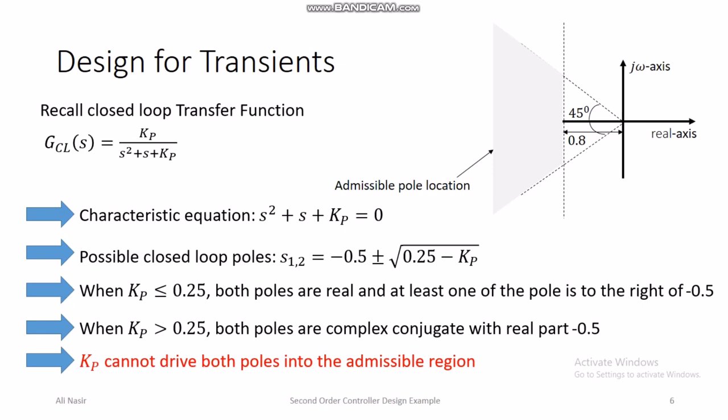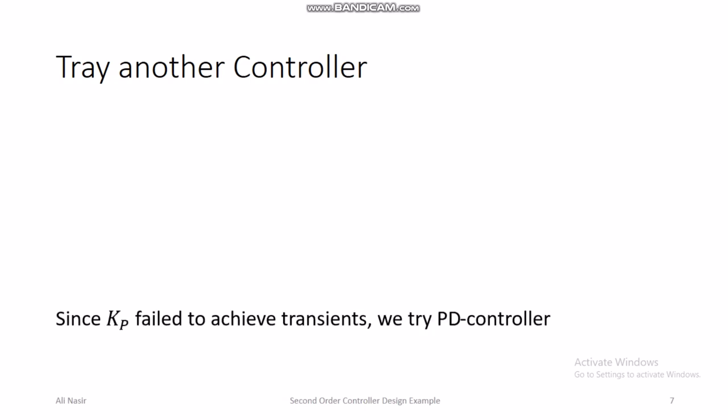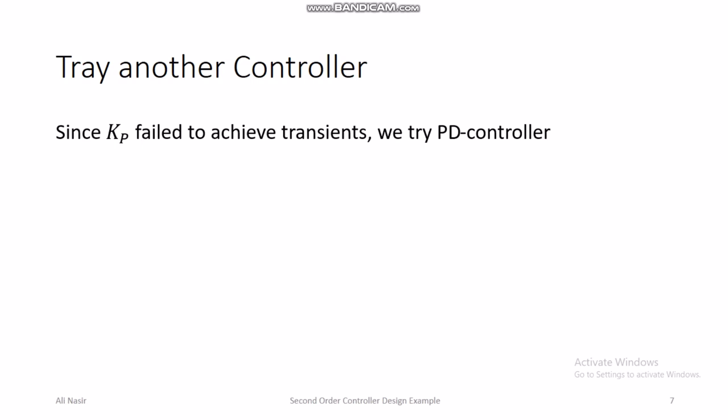Since kp fails to achieve the transient specs, we must try another controller. We try a PD controller, since the P controller has failed to achieve the desired transient specifications.